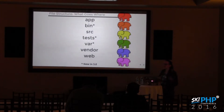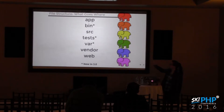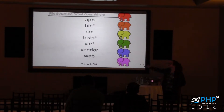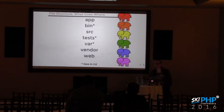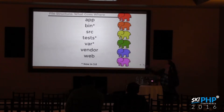Let's look at the directory structure created by all these automatic commands. We have: app, bin, src, tests, var, vendor, and web. The ones that are starred — bin, var, and tests — are new in Symfony 3. They don't exist in Symfony 2, so if you do a version 2 install, those will not be there.